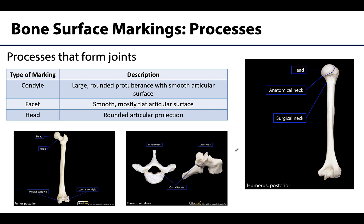Next let's talk processes — there are many different types of processes, projections, or moundings of bone, and these all mean kind of the same thing. There will be processes that form joints: the condyle, the facet, or the head. You can see some condyles right here on the distal femur, the head of a femur or the head of the humerus, as well as facets — you can see a facet right here when we're looking at the side of the vertebrae. For these types of processes that play a role in joint formation, notice that their surfaces are very smooth. This is because articular cartilage sat on the bone during life, making these areas really smooth. If I'm trying to figure out if a joint formed in a certain part of the bone, I look to see if the bone is extremely smooth.